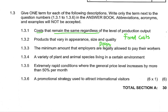Or one can say these are heterogeneous products, as the opposite of homogeneous products. Then 1.3.3: The minimum amount that employers are legally allowed to pay workers. This is known as the minimum wage.